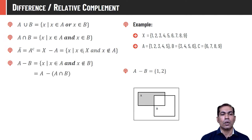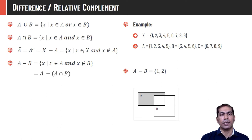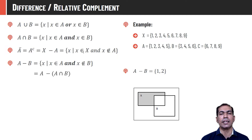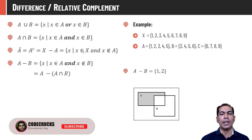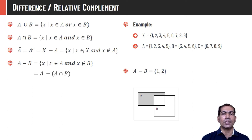A − B is the collection of all elements x where x ∈ A but x ∉ B — we take the difference with respect to A instead of X, hence it is called relative complement. Another way to write this: A − (A ∩ B). For our example, A = {1,2,3,4,5}, B = {3,4,5,6}. Common elements are 3, 4, 5. Subtracting these from A gives A − B = {1, 2}.